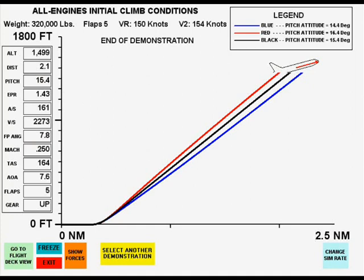In summary, both the all engines initial climb pitch attitude and airspeed are found at the same time. In this example, they are 15.4 degrees and 161 knots.